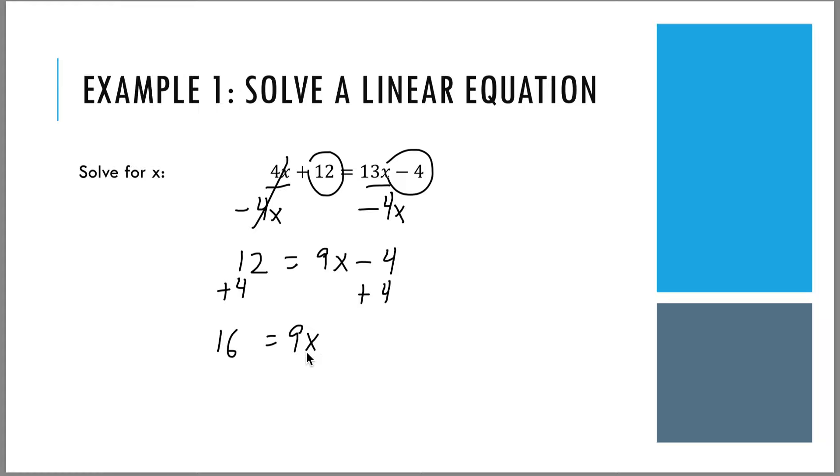And finally, to get x by itself, we can now divide by 9. Whenever the term is by itself, nothing is added or subtracted from the term, it's all by itself. If it was multiplied by a number, then you have to divide by that number in order to get it by itself. This means that x is equal to 16 over 9. As a decimal, this is approximately 1.8.